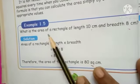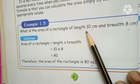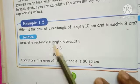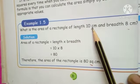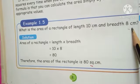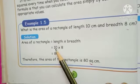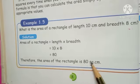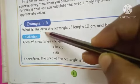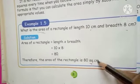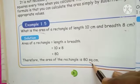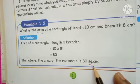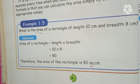What is the area of a rectangle with length 10 centimeter and breadth 8 centimeter? Area of rectangle equals length multiplied by breadth. Length is 10 centimeter, breadth is 8 centimeter. So directly: 10 multiply 8 equals 80. The area of the rectangle is 80 square centimeter — written as sq. cm.